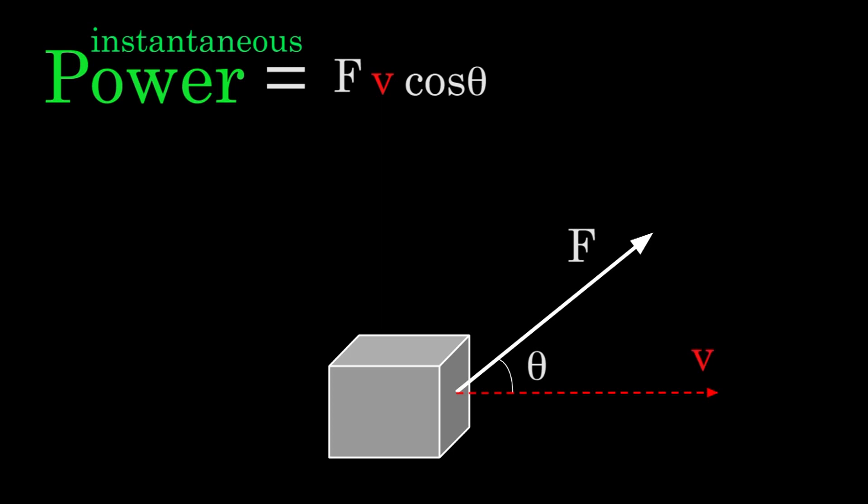But in many cases, the force is in the same direction as the velocity, which means the angle between the force and the velocity is zero. And since cosine of zero is one, you don't really need the cosine in the formula at all. And you find that the instantaneous power is just the force times the speed.